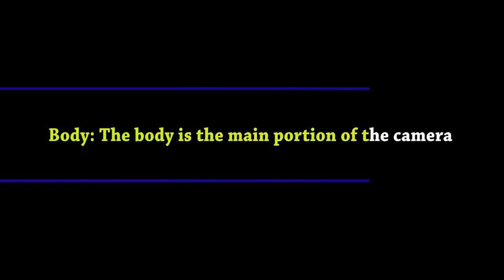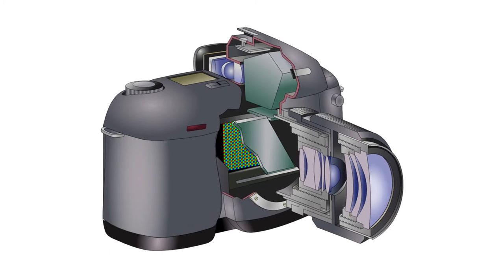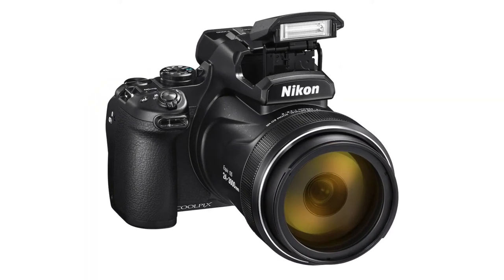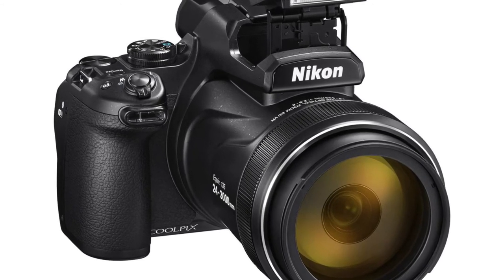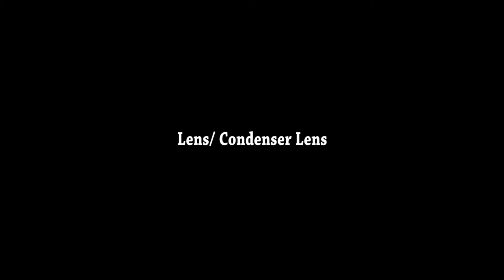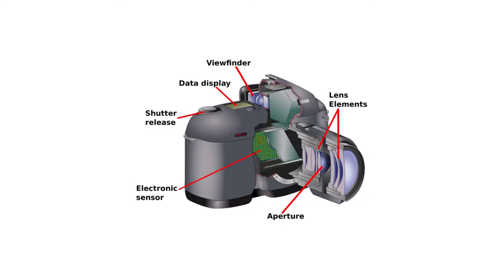Camera body. The body is the main portion of the camera and can come in a number of different shapes and sizes. DSLRs tend to be larger bodied and a bit heavier. The lens is one of the most vital parts of a camera — the light enters through the lens and this is where the photo process begins.